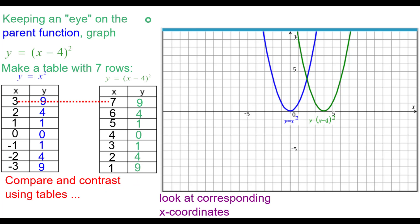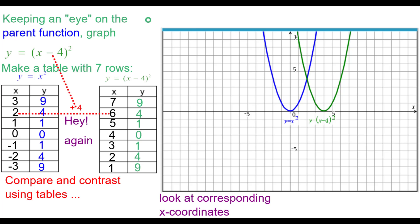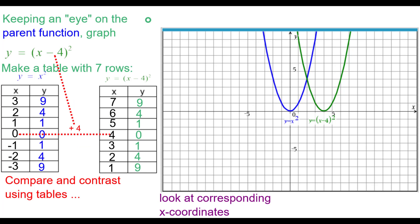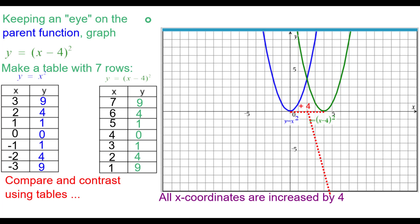From 3 going to 7, you add 4. Wait — the equation says minus 4. From 2 to 6 is plus 4, and again, minus 4 in the equation. So the pattern is: when there's a minus 4 inside the parentheses, you add 4 to the x coordinates. All the x coordinates are increased by 4 to shift the graph to the right, because of that minus 4 inside the squaring function — it's reversed.